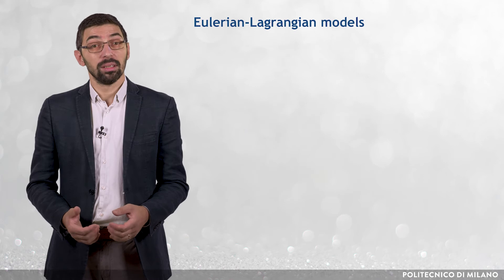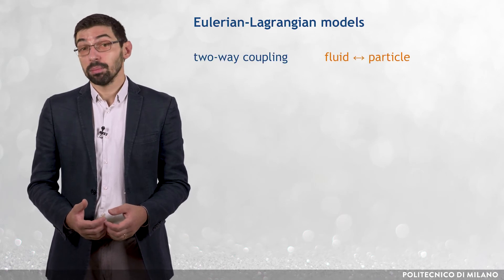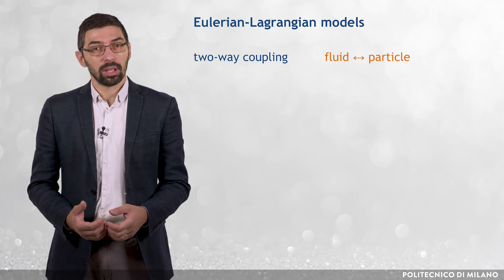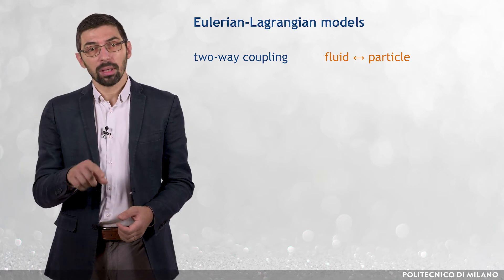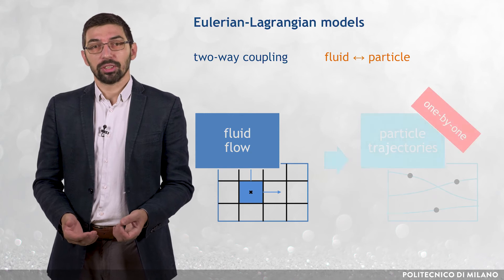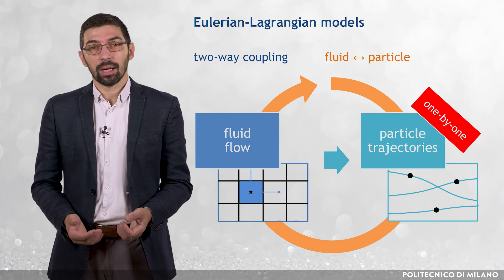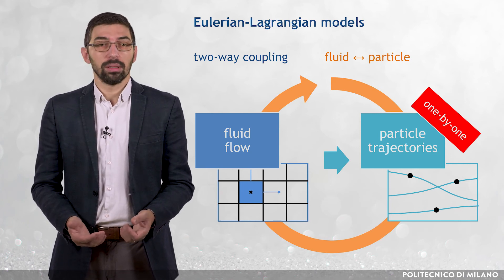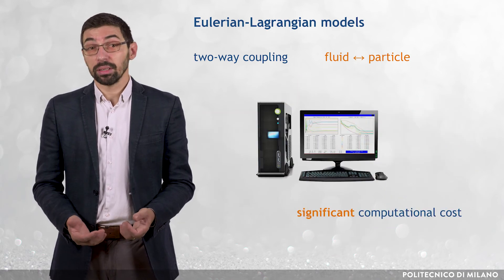However, in the case of two-way coupling regime, the fluid flow field is affected by the particles. Therefore, the fluid flow equations and the particle equations of motion are solved within a loop. After solving the fluid flow equations, the particles' trajectories are calculated one by one. The fluid flow equations are modified according to the calculated trajectories, and so the whole loop is repeated. So the computational burden might become significant.